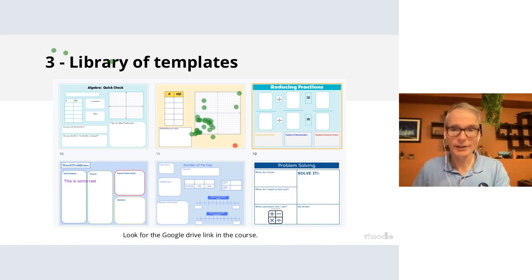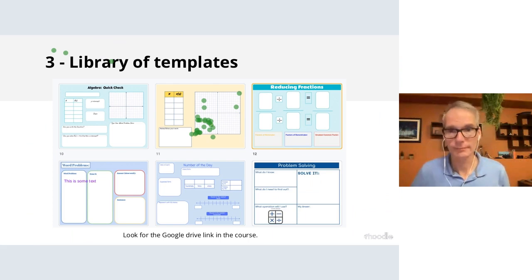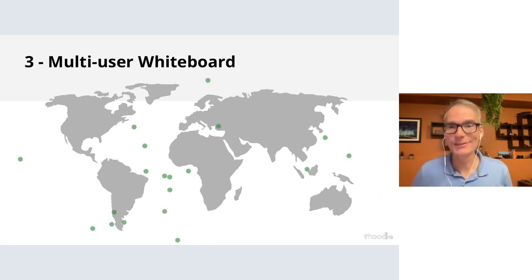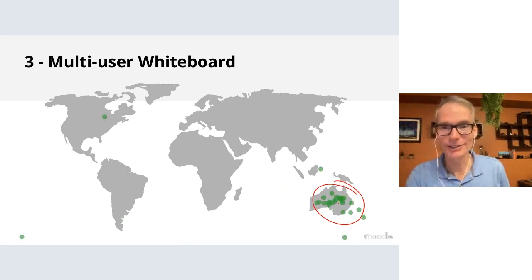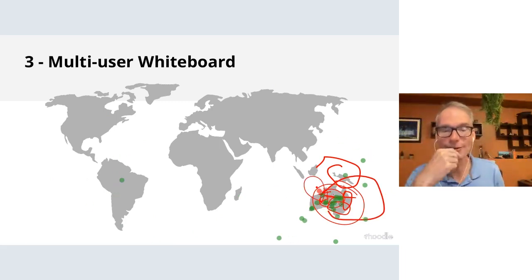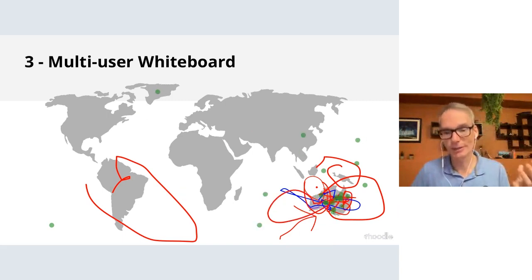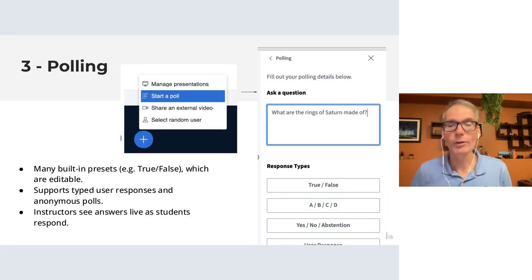One contributor to this course, Erin Carr, uses multi-user whiteboard extensively and has shared templates in a Google Drive link in the course. For example, you can ask students to point their cursor to Australia on a world map and see everyone who's pointing correctly. A future update will allow you to remove the ability to draw, so it's purely visual pointing. This is another way to do formative assessment — so many types of visual activities are possible.